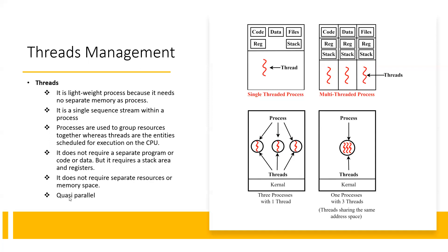Threads are quasi-parallel — it seems like threads are executed in parallel, but actually they are executed sequentially. The execution is so fast that it appears as though multiple threads are running simultaneously. One thread executes, and very quickly the next thread executes, with a very small context-switching time. Because the time is small and the execution is fast, to humans it seems like multiple threads are being executed at once. It is not truly parallel — it only seems parallel.